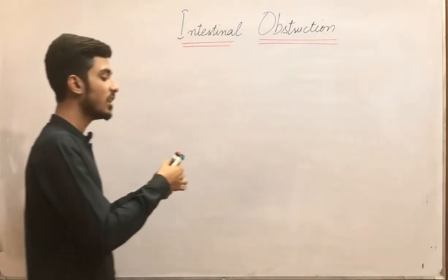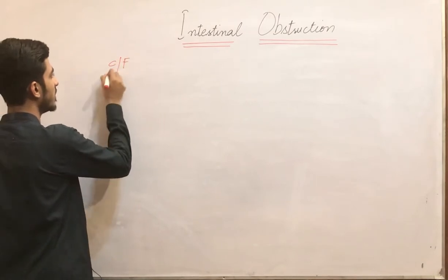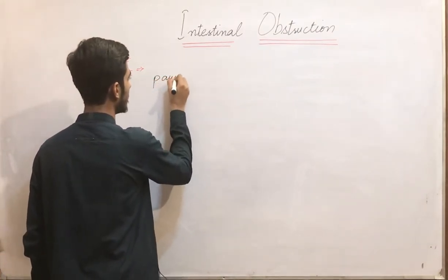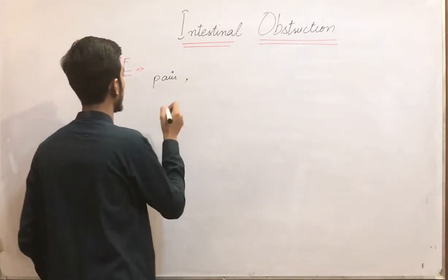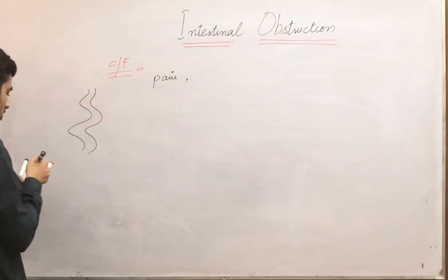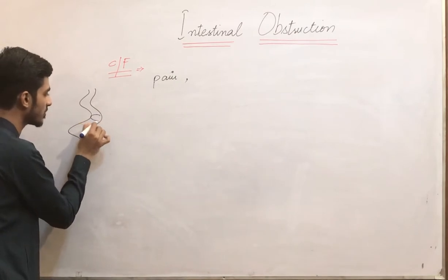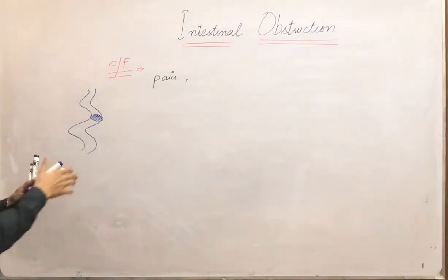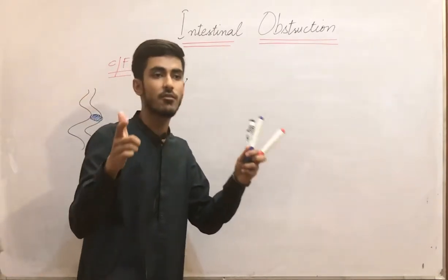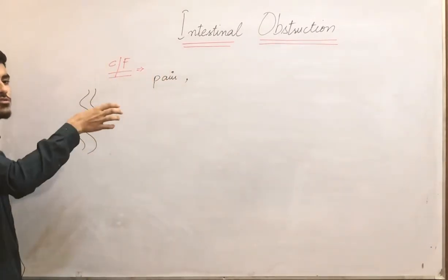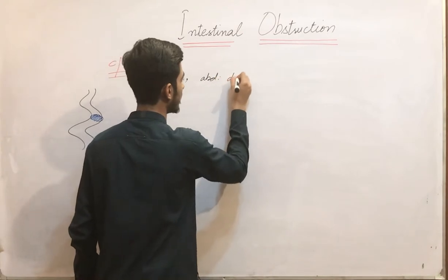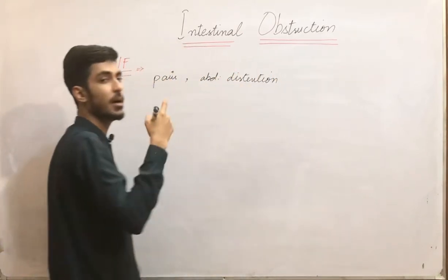Now, what will be the clinical presentation of this disease — the clinical features of intestinal obstruction? The first is pain; obviously the patient will be complaining of pain. The second clinical feature will be abdominal distension. The intestine proximal to the obstruction will be distended because food will be stuck and start to accumulate there.